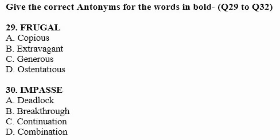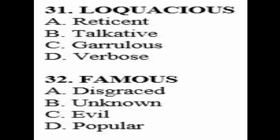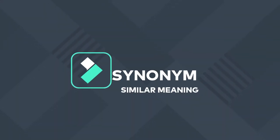Give the correct antonyms — antonyms means opposite words. Question 29: the word 'frugal' — options: A) copious, B) extravagant, C) generous, D) ostentatious. Frugal means stingy, so the opposite is B — extravagant. Question 30 is 'impasse,' question 31 is 'audacious,' and question 32 is 'famous' — find what the opposite word is for each.